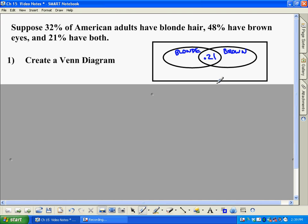In order to fill the rest of it out, we know 48% have brown hair, but we already have 21% that have both blonde and brown hair. So what we do is, what's 48 minus 21? Well, that's 27. So that means 27% of people have brown eyes, but do not have blonde hair.